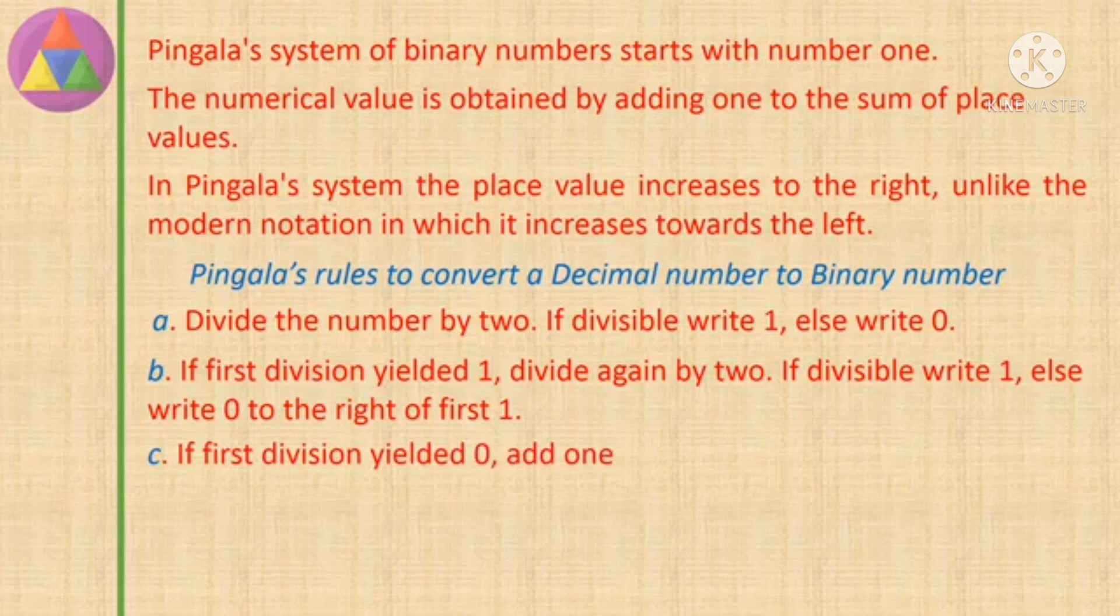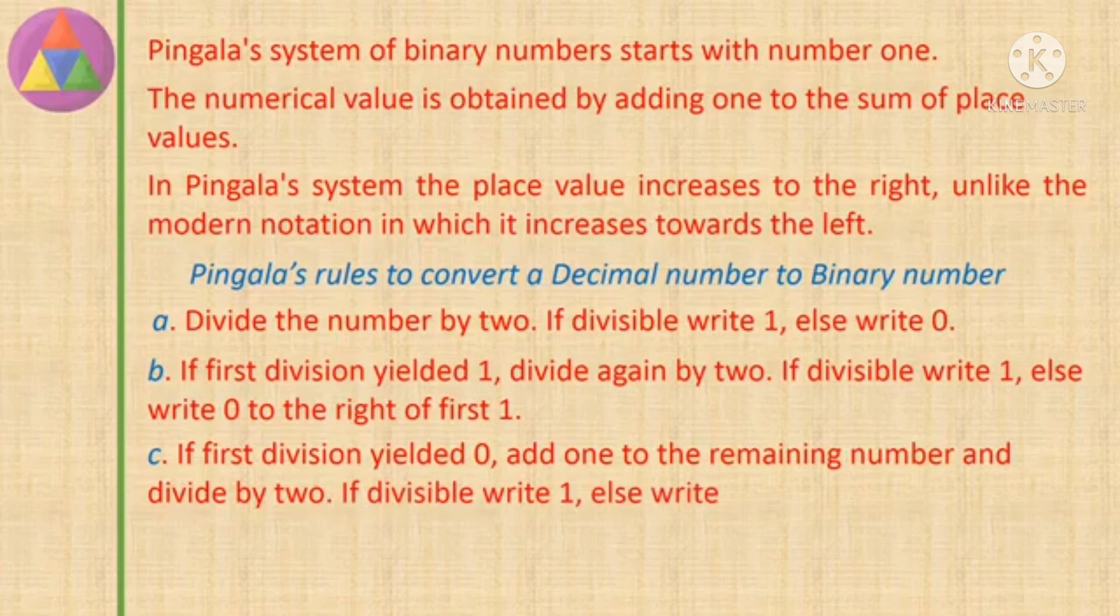C. If first division yielded 0, add 1 to the remaining number and divide by 2. If divisible write 1, else write 0 to the right of first 0.